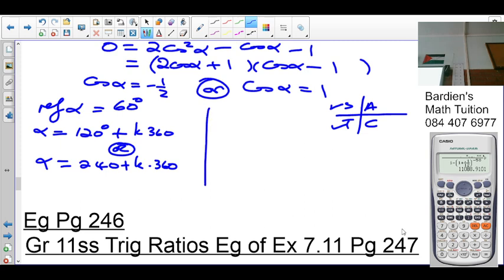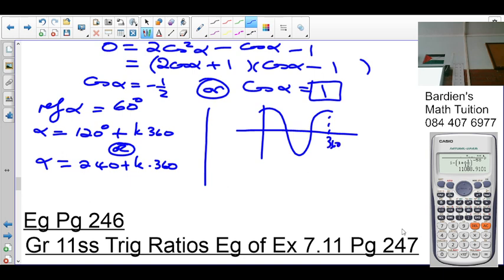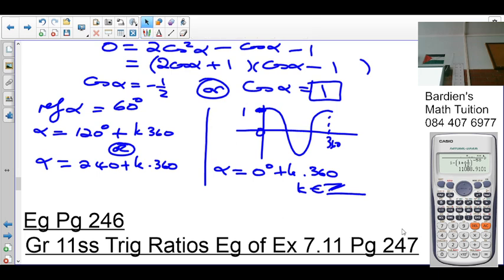On the other hand, with cos α = 1, we take it to the cos graph. That's what the cos graph looks like. That's normally 360. 360 and 0 is the same solution. So where is cos 1? At 0. So we say α = 0 + k × 360. And k is an element of integers. Any confusion there?